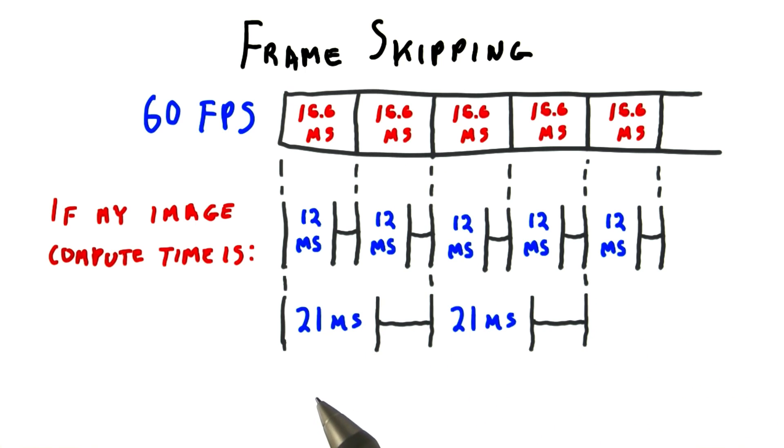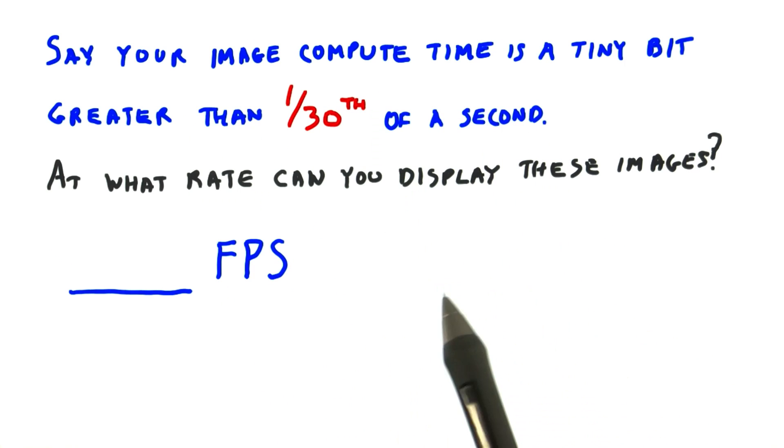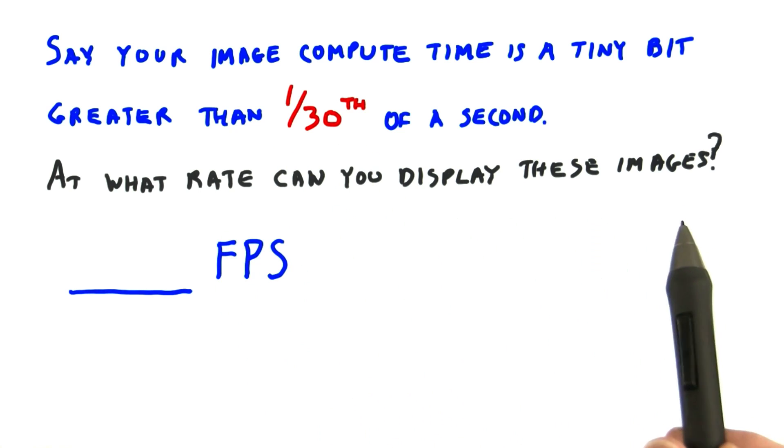The question to you then is, what is the effective frame rate if you just miss 30 frames per second? In other words, say your image compute time is a tiny bit greater than 1/30th of a second. At what rate can you display these images?